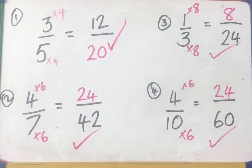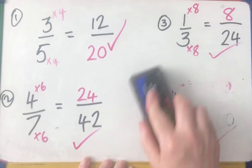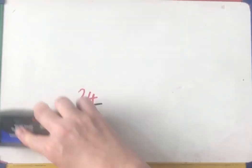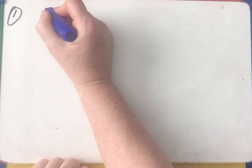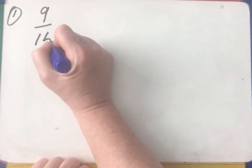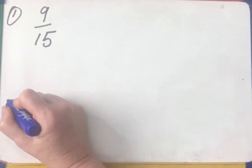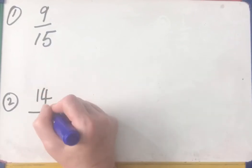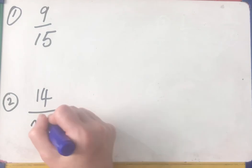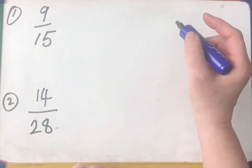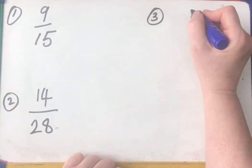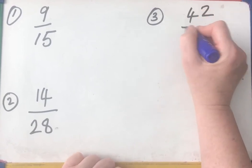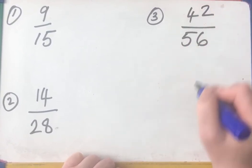And now before you go and have a cup of tea, I'm just going to give you some to cancel down to their simplest forms. So here we go. This time for number one, cancel down 9/15 to its simplest form. 14/28 to its simplest form.